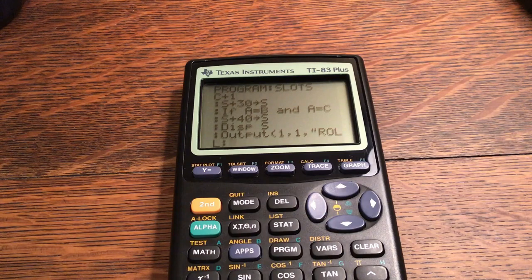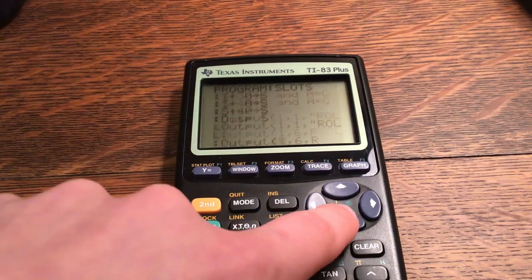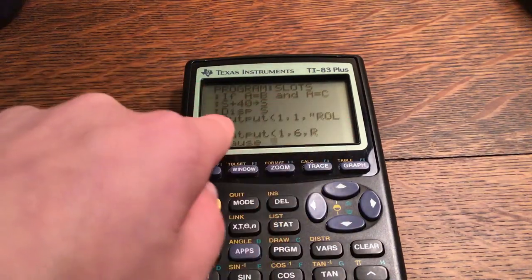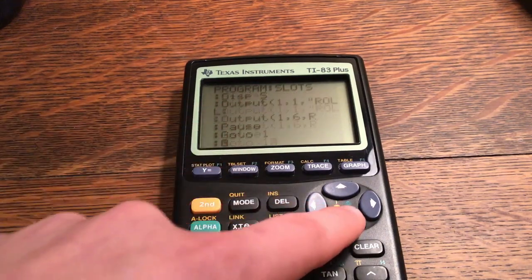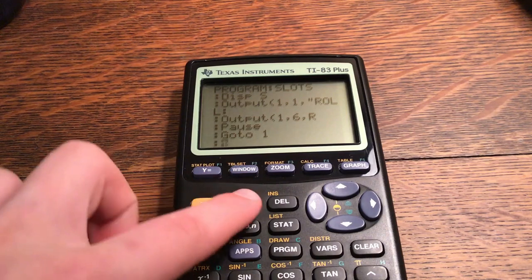Then output one comma one comma quote Roll. So you can see how many rolls you've done. Output one comma six, R, because this is five characters and I wanted it to be right next to it. Pause, then go to one. So that is the end of this program. I hope you enjoyed this program and I hope you have fun playing this.